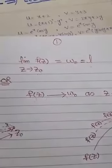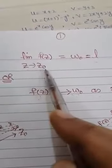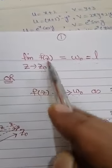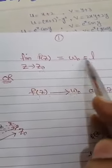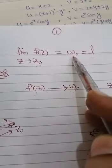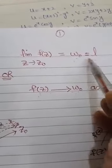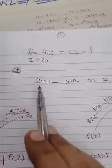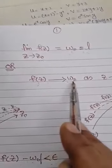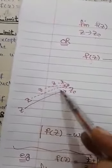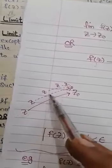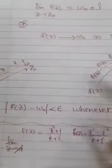For example, we can write: limit of f(z) as z approaches z-naught equals w-naught (you can also write it as l or any symbol). This means when z approaches z-naught, the function approaches w-naught — when z is close to z-naught, the function is also close to w-naught. We can write this limit definition in modulus form.